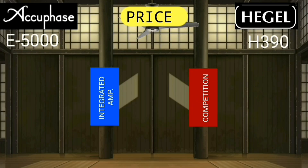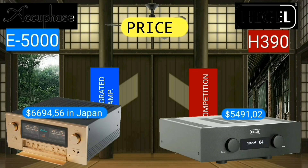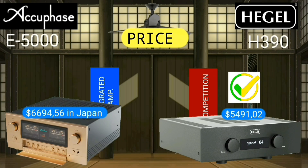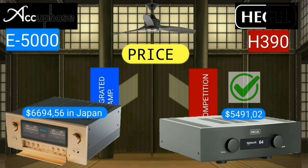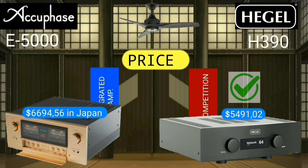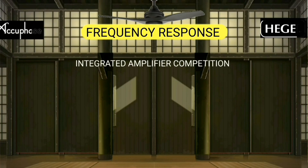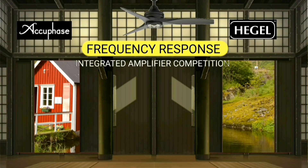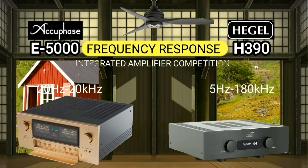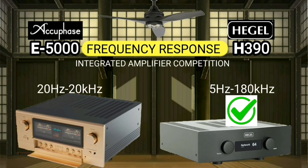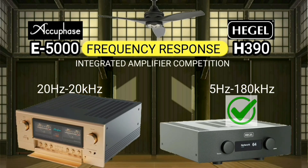Talking about the price of the AQPACE E5000, it is 1,200 USD more expensive. The frequency response of the Hegel H390 is wider than that of the AQPACE E5000.